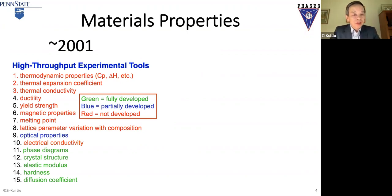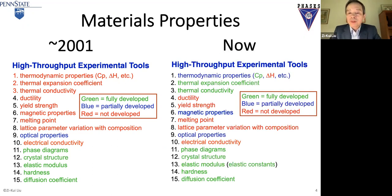This slide shows 14 properties compiled by JC about 20 years ago. These properties are color-coded: the green ones are fully developed through high-throughput experimental tools, the red ones were not developed yet, and the blue ones are partially developed. Now, after 20 years, three more are green and one more is in blue.